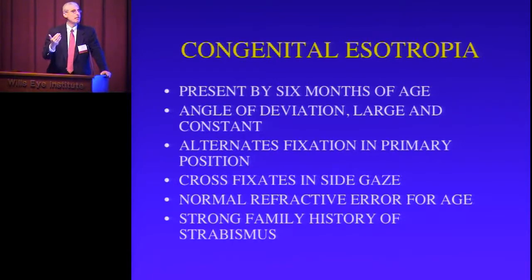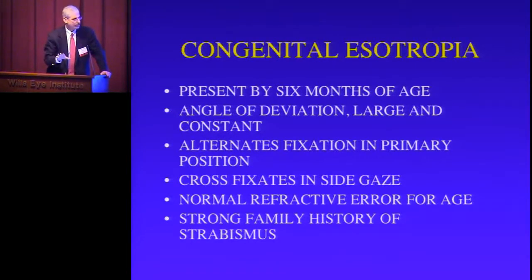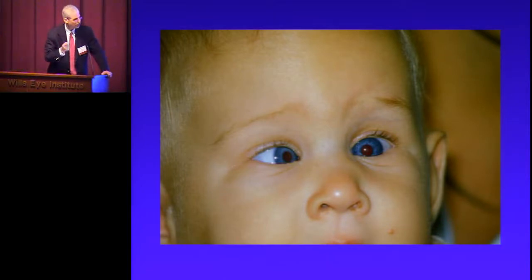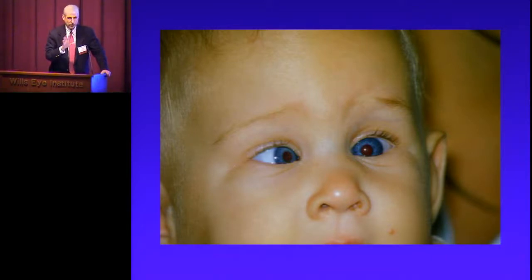Most of them have the normal refractive error for their age — most young children are mildly farsighted (hyperopic) and don't wear glasses. There's often a very strong family history of strabismus. Here you see a child with a very large and constant esotropia — this won't be confused with pseudo-esotropia because under age one, most children with esotropia have a very large and constant deviation. Not 100%, but a very high percentage.